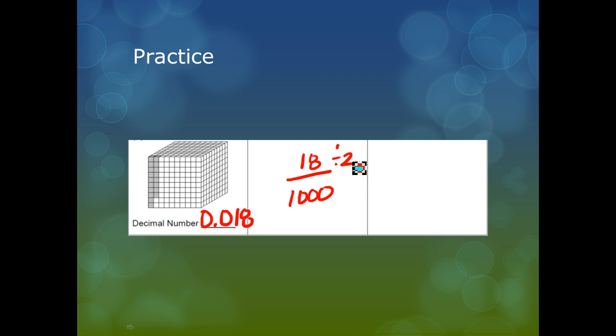Again, I'm going to divide this by 2 because it's an even number. 18 divided by 2 is 9. 1000 divided by 2 is 500. And this is my simplest fraction. So 9/500 is the same as 18 thousandths. And that's the same as 0.018.